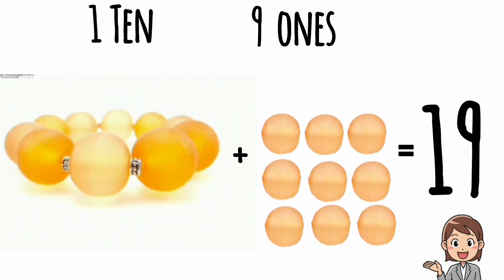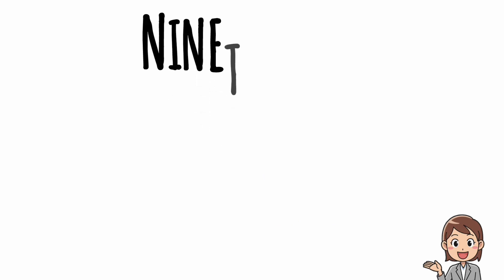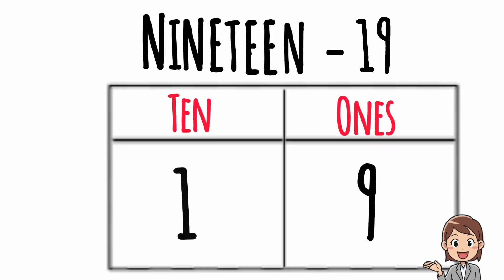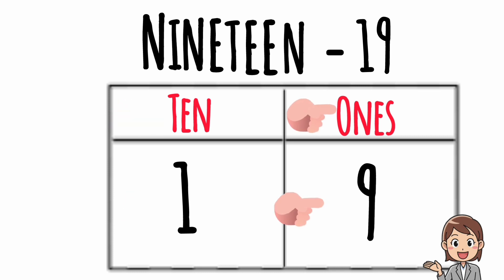Nineteen — N, I, N, E, T, E, E, N. Nineteen. Put this nineteen in the tabular column. So nineteen contains one ten and nine ones.